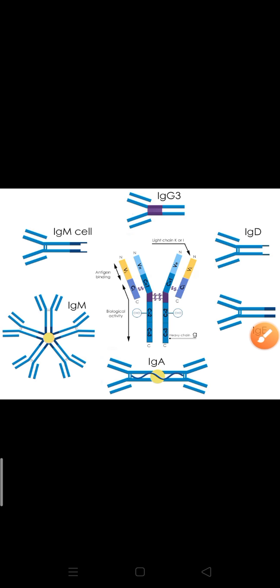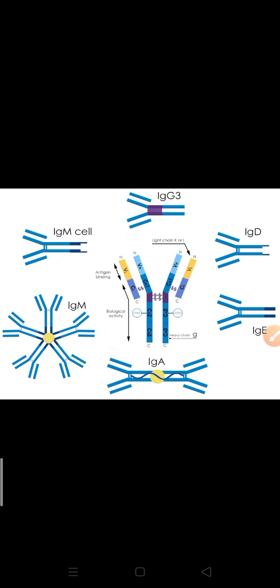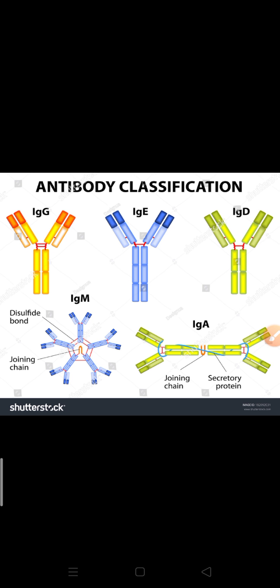Now let's look at the classification of immunoglobulins. There are five different types of immunoglobulins: IgA, IgD, IgG, IgE, and IgM. Each immunoglobulin has a specific function.